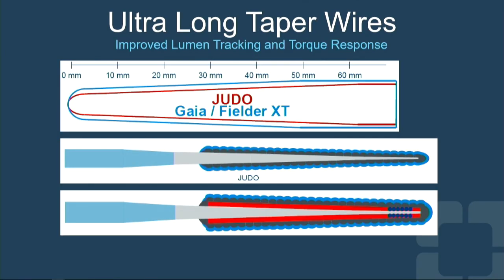Boston has just come out with a new line of wires called the Judo wires. These wires are tapered over 60 millimeters, whereas typically wires are tapered over 30 to 40 millimeters — the idea being to make the wire even more flexible and more likely to traverse long, tortuous segments. These wires also have a very tight coil right on top of the core, whereas more traditional wires have a gap between the coil and the core. The idea is that this perhaps gives the wire more tactile response and steerability.